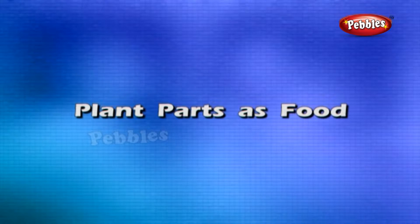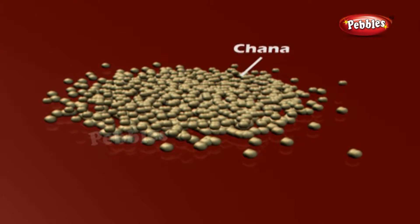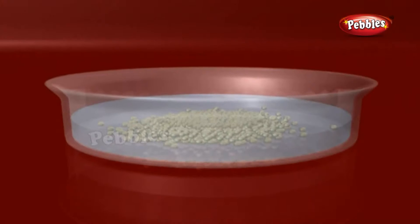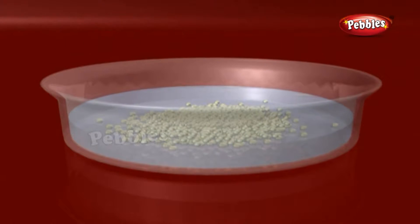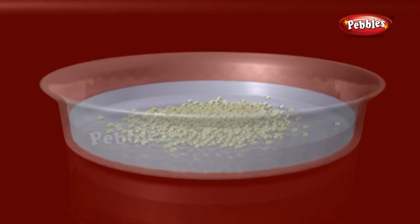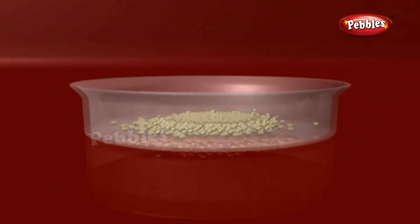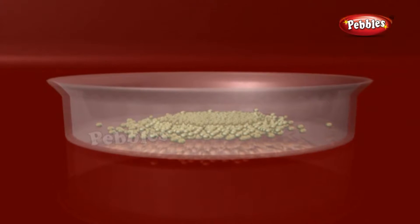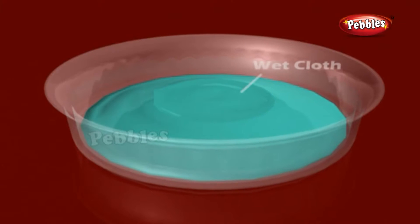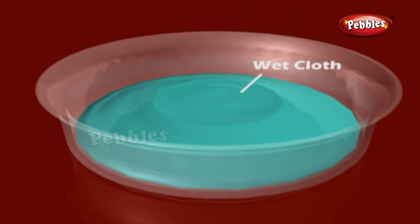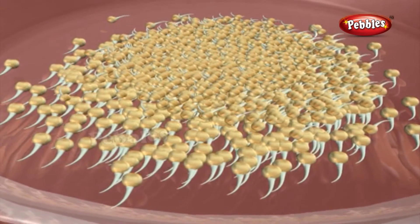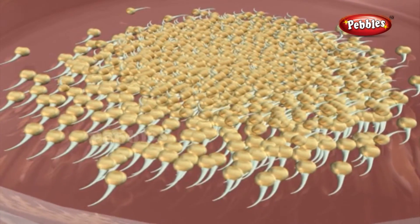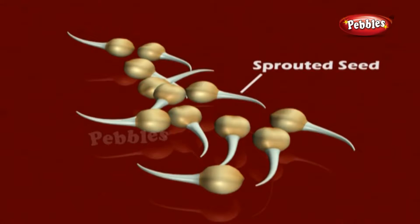Plant Parts as Food Activity: Take some dry seeds of Moong or Channa. Put a small quantity of seeds in a container filled with water and leave aside for a day. Next day, drain the water completely and leave the seeds in the vessel. Wrap them with a piece of wet cloth and set aside. The following day, observe any changes in the seeds — a small white structure may have grown out of the seeds. If so, the seeds have sprouted.